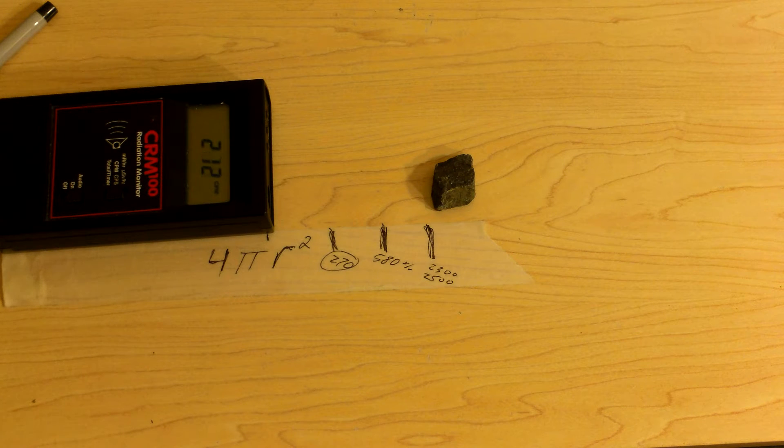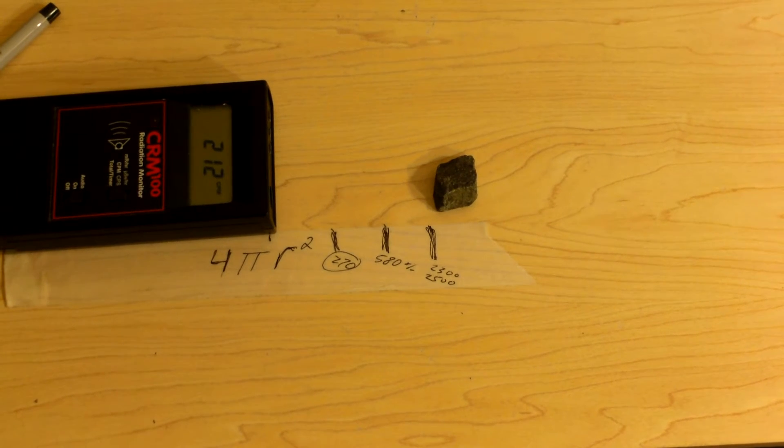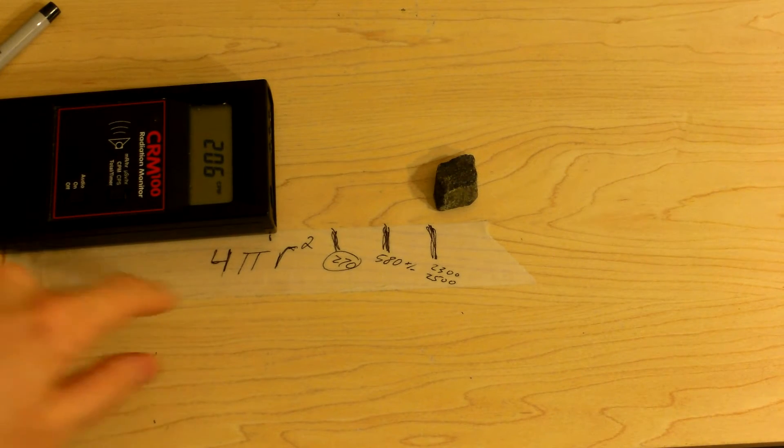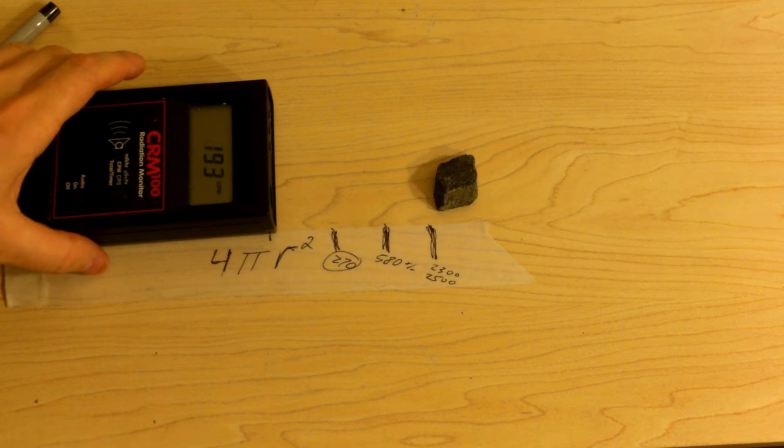And so, I think you're starting to hopefully see the point I'm trying to make here. Distance makes a huge difference. The distance inverse square rule is what's going on.